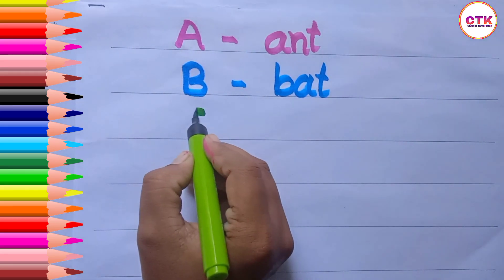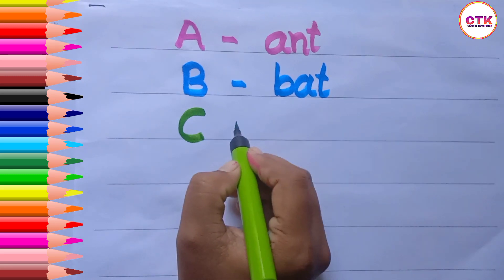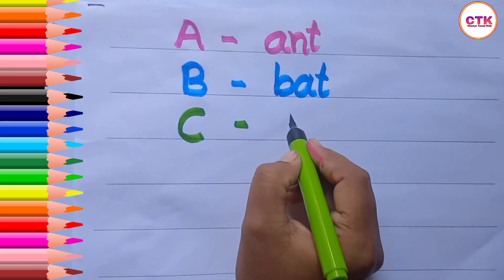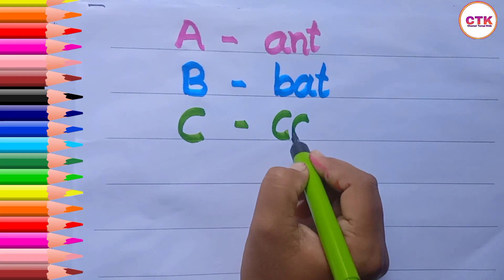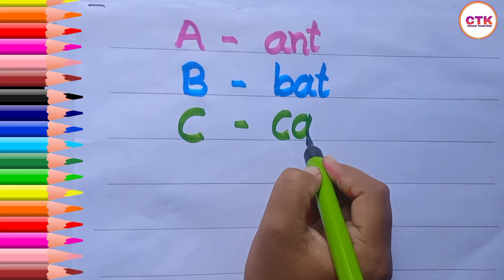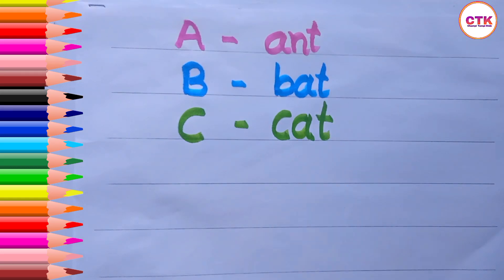This is green color. C. C for cat. C, A, T — cat.